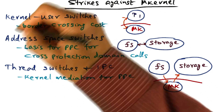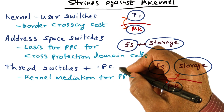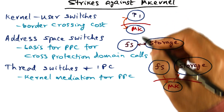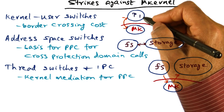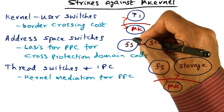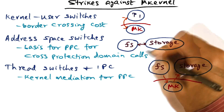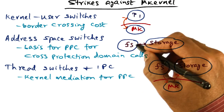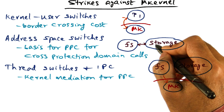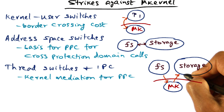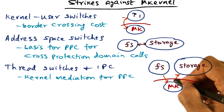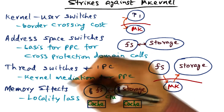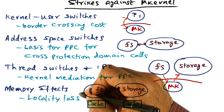All three of these strikes are explicit costs associated with providing an application-level service in a microkernel-based operating system. The application has to first make a request to the microkernel, the microkernel may pass that request to server processes living above it, the server processes may talk to one another, and the protected procedure call itself is mediated by the microkernel via thread switching and inter-process communication. In addition to these explicit costs, there is a fourth cost — an implicit cost.